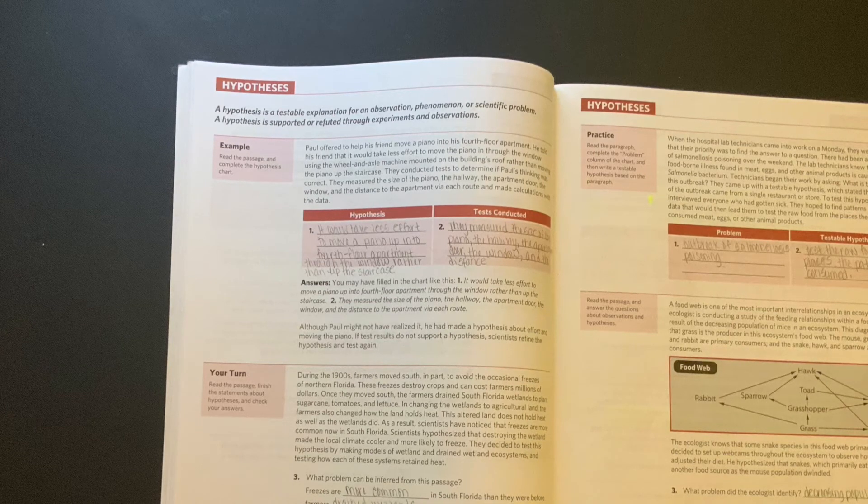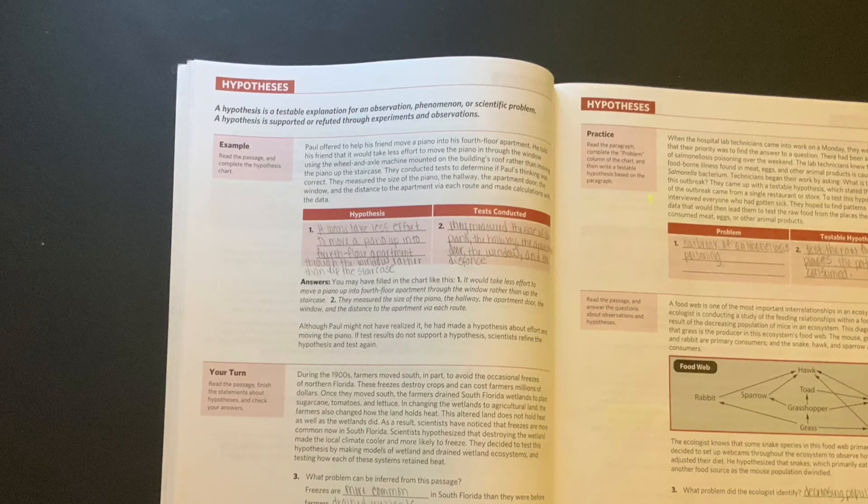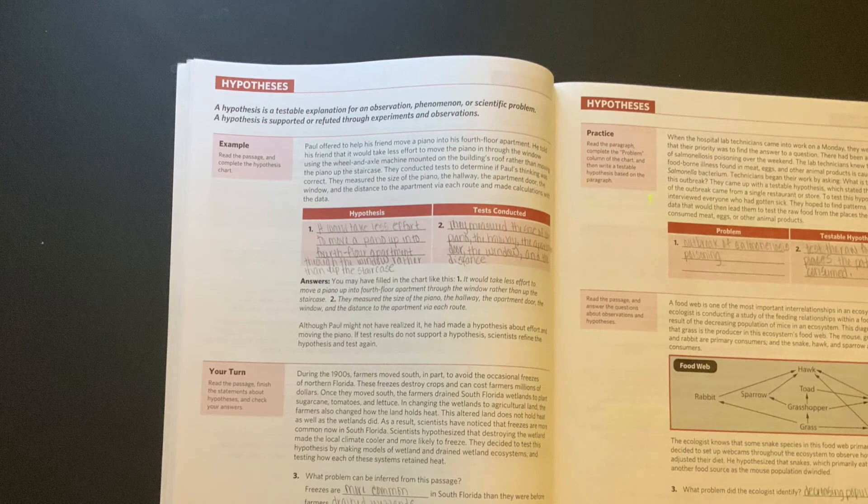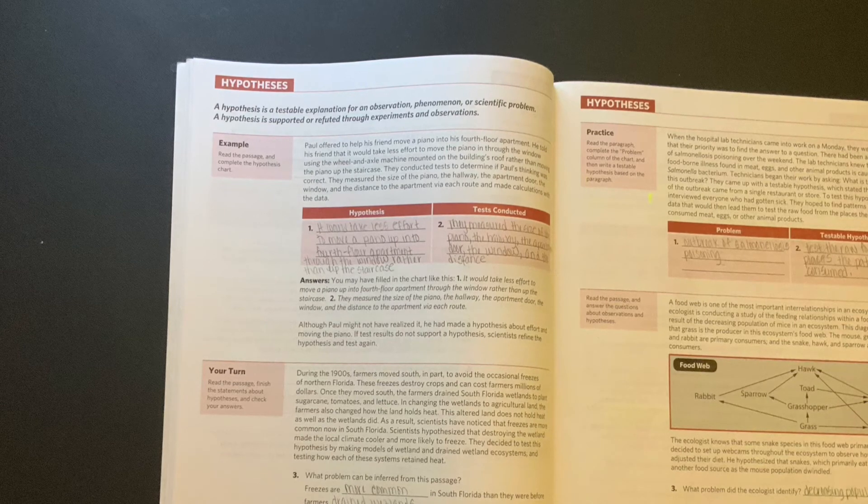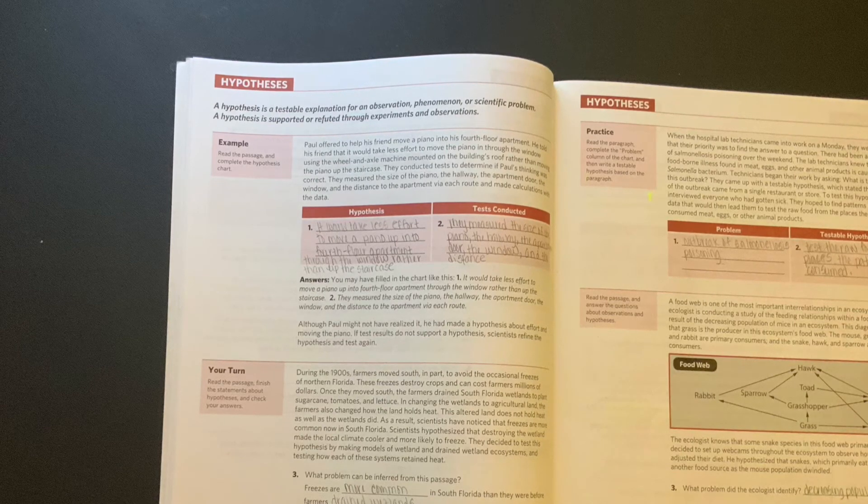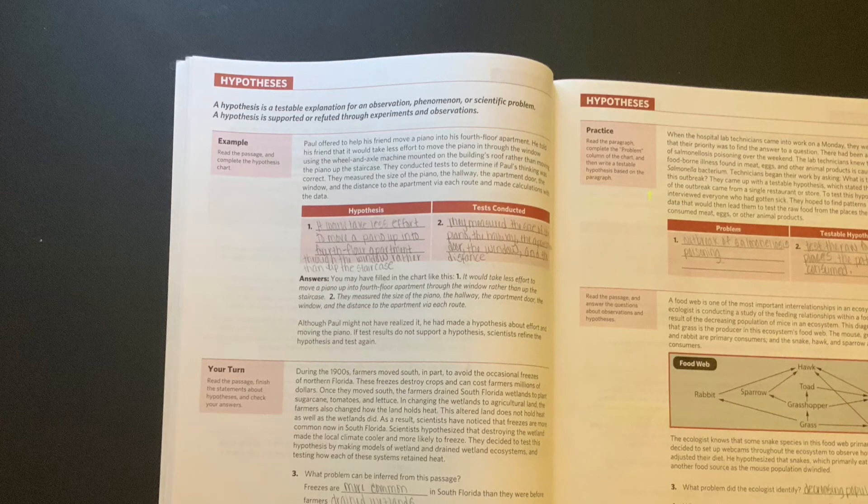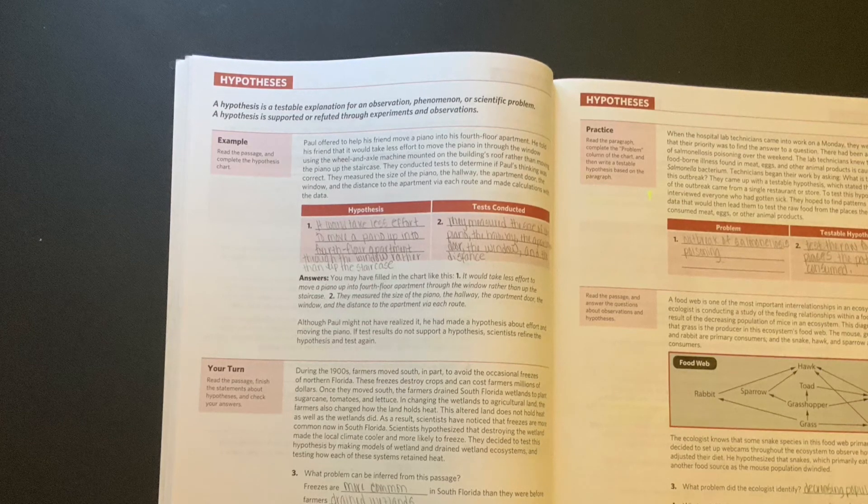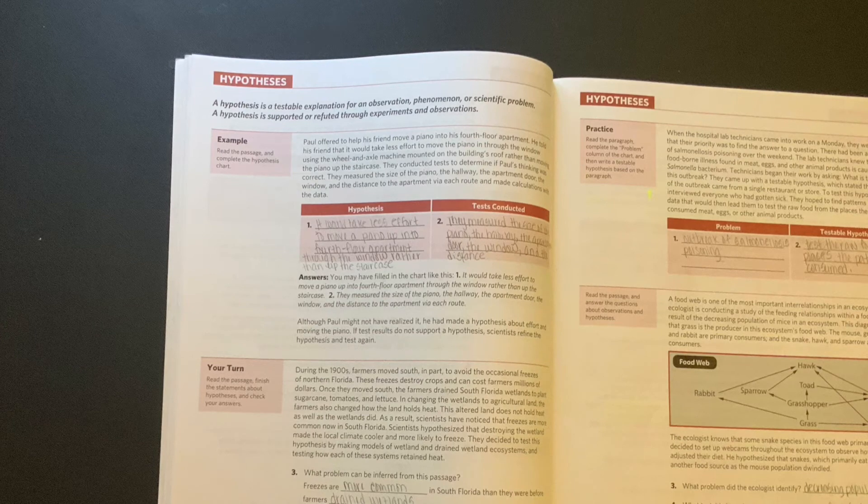And as they stated in the last sentence, he said he hypothesized that snakes which primarily eat mice would find another source as the mouse population dwindles. So if you don't know what a word means, or you get tricked on a word, just kind of look at the words around it and you will honestly be able to figure out what your answer is.